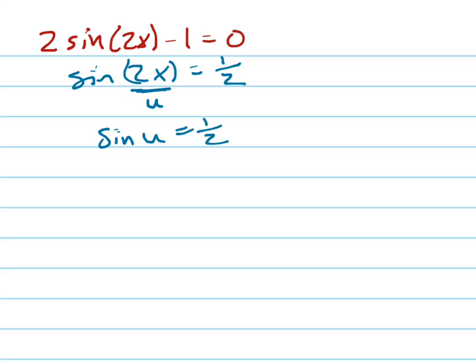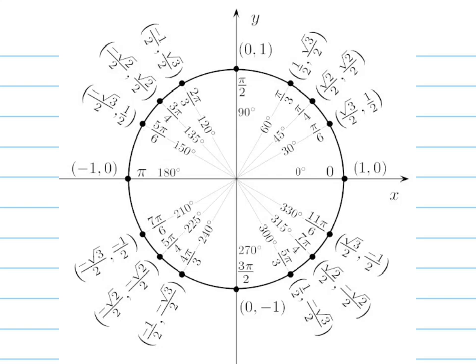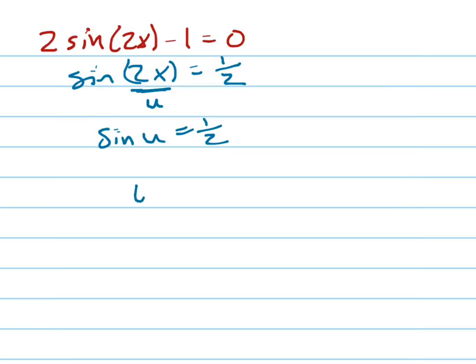Now look at your unit circle, and the sine is 1 half at pi over 6. And it's also 1 half at 5 pi over 6. But here's the trick. You've got to go around. Well, let me go back and explain this. So pi over 6 and 5 pi over 6 is your answer, u equals pi over 6 and 5 pi over 6.